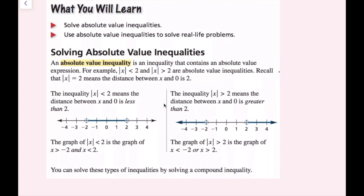The inequality on the right, the absolute value of x is greater than 2, means that the distance between x and 0 is greater than 2. This graph represents the solution set for this absolute value inequality. The graph of the absolute value of x is greater than 2 is the graph of x is less than negative 2 or x is greater than 2.